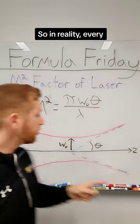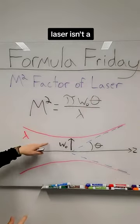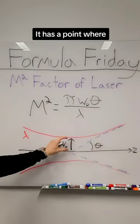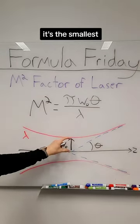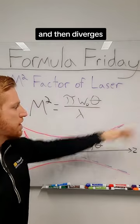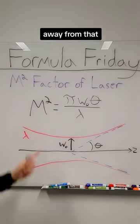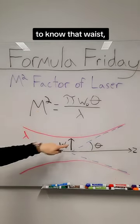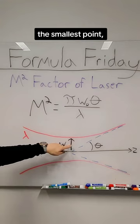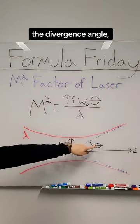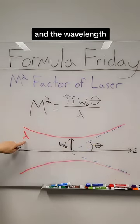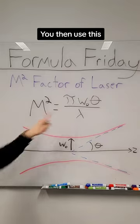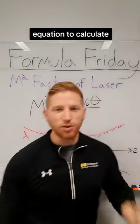In reality, every laser isn't a perfect, straight line. It has a point where it's the smallest, and then it diverges away from that. To know the M-squared factor, you need to know that waist — the smallest point — the divergence angle, and the wavelength of the laser. You then use this equation to calculate the M-squared factor.